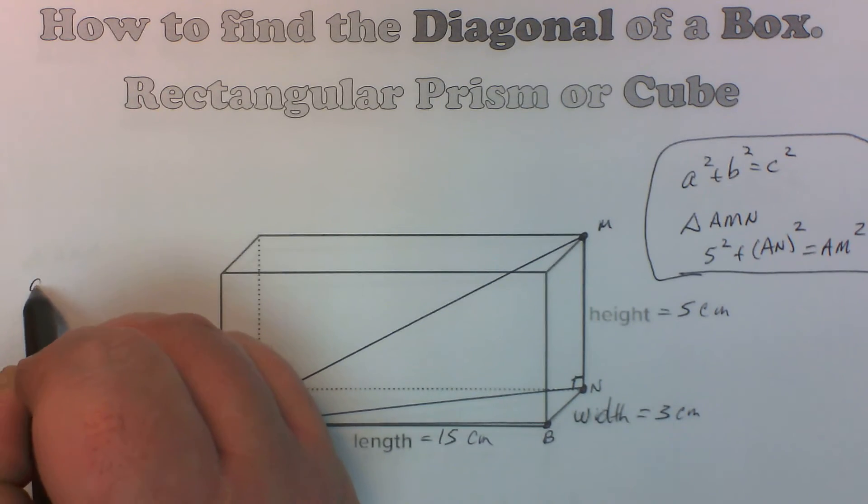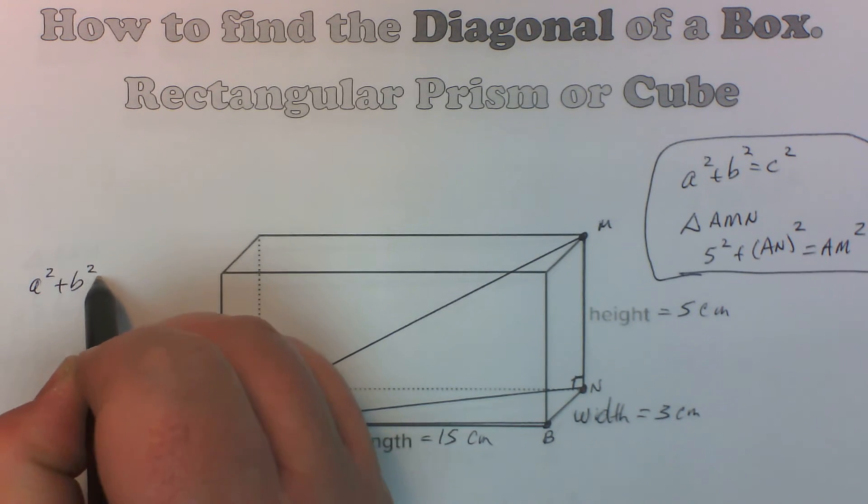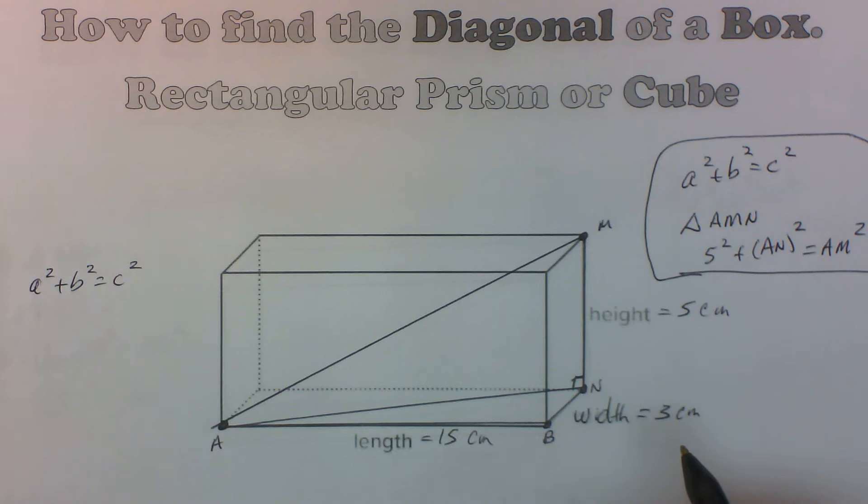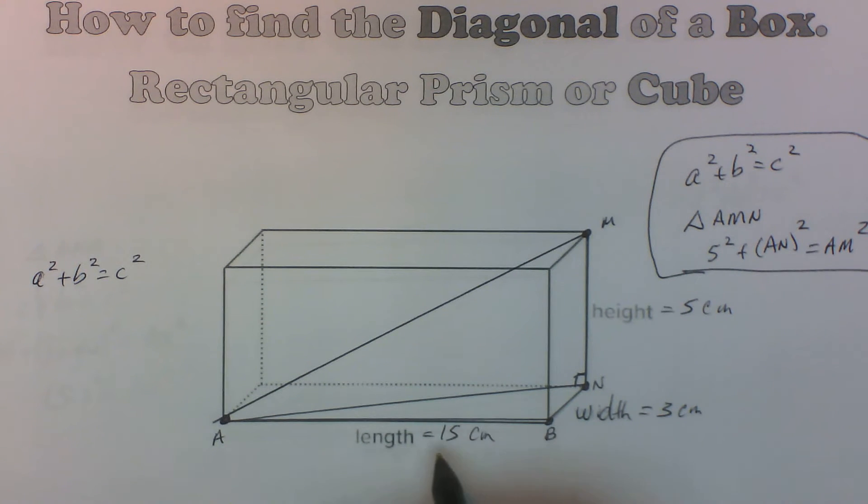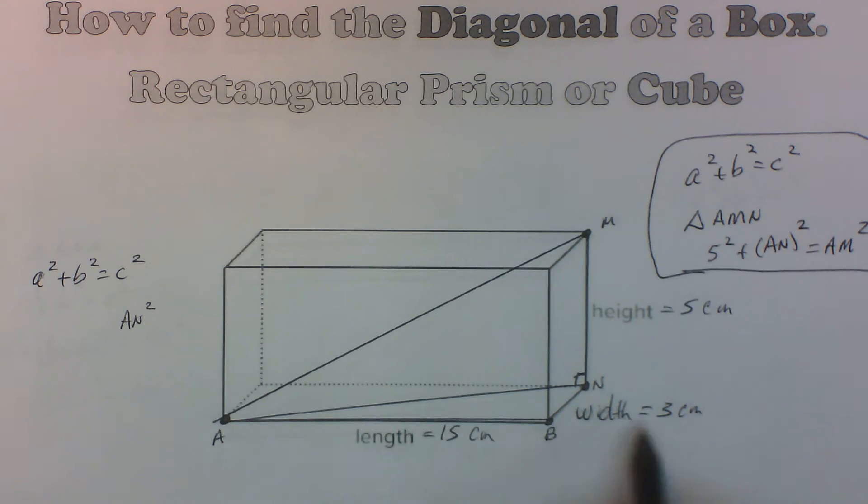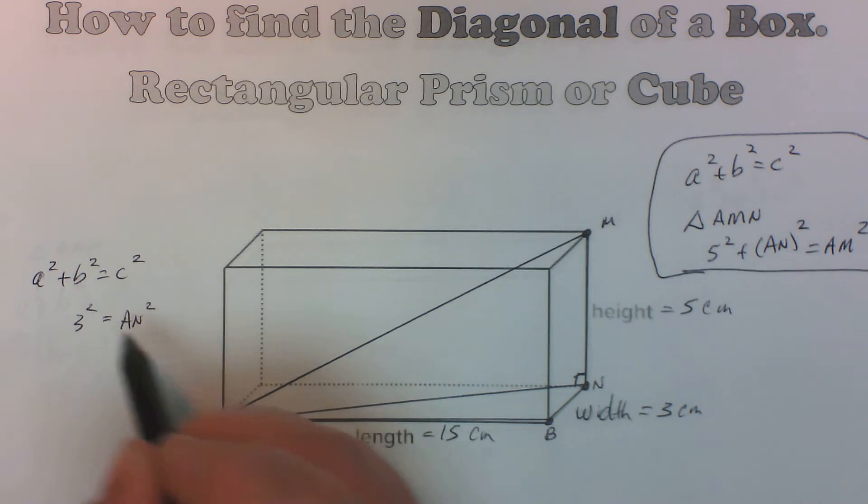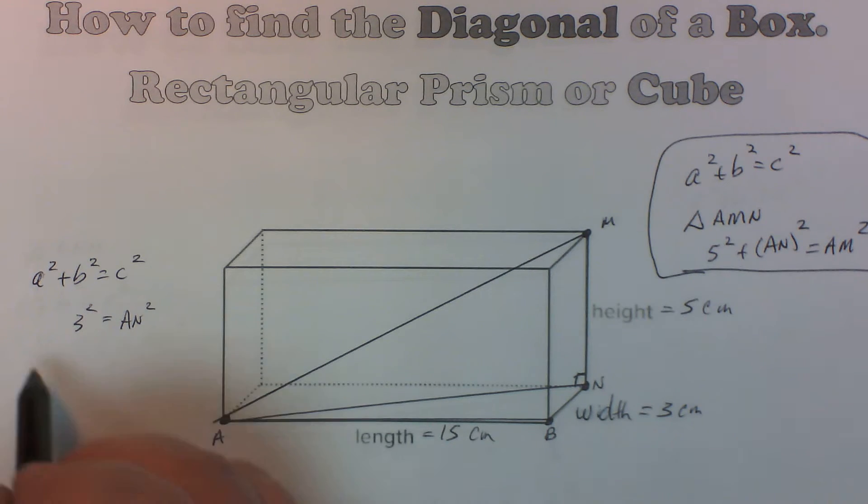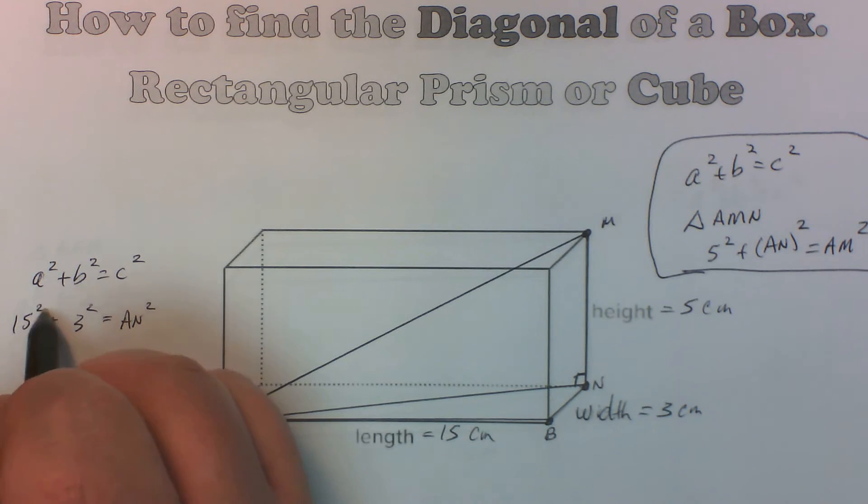So let's go ahead and move over here. So we got Pythagorean theorem, right? Always start with your formula, even if it's really easy, because it just keeps everything organized and lets you know what you're doing. So we know that AN is the hypotenuse. That's what we're trying to figure out. We know that the width is 3, and we know the length is 15.